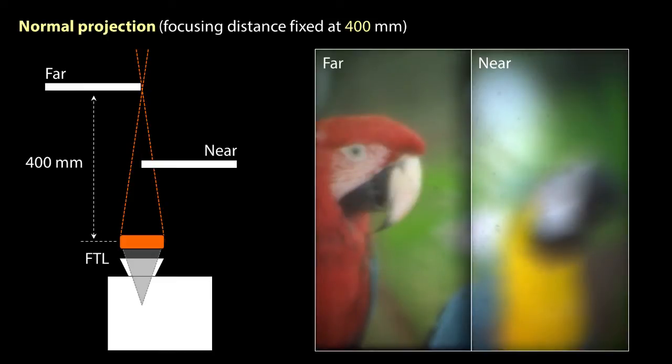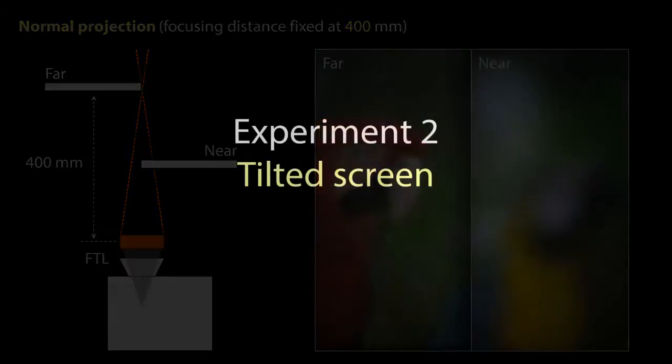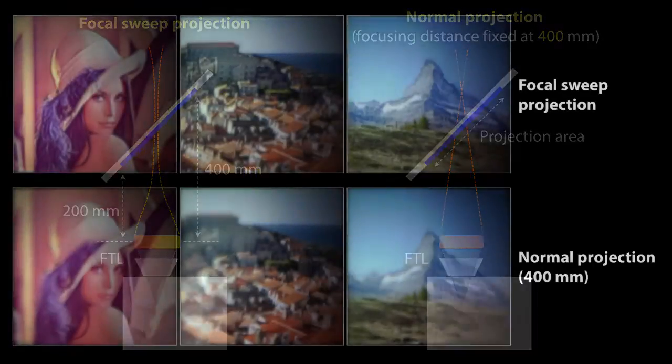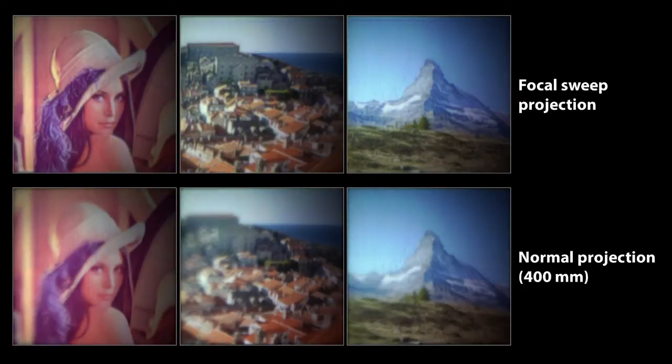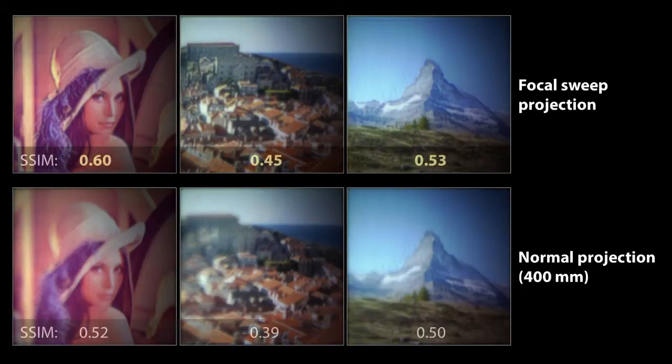We conducted another experiment using a tilted surface. The left parts of the projected results of normal projection get blurred, while focal sweep projection provides a nearly all-in-focus image. We can confirm that the proposed focal sweep projection method provided better image quality from the SSIM values.